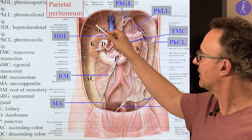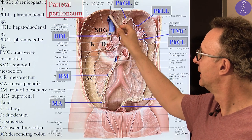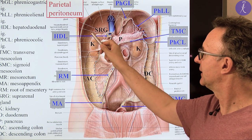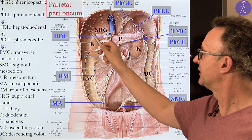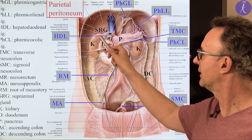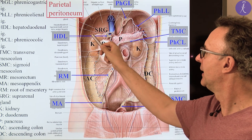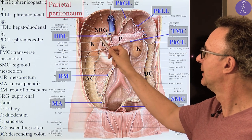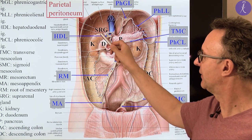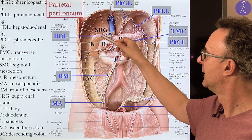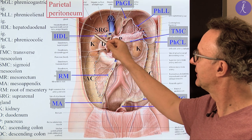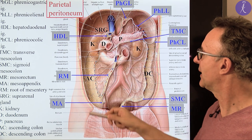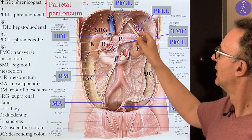This is called the right coronary ligament, which is reflected posteriorly in front of the right kidney as the hepato-renal ligament. This is another reflection between the parietal and visceral peritoneum layers, and the transition is called the right triangular ligament.